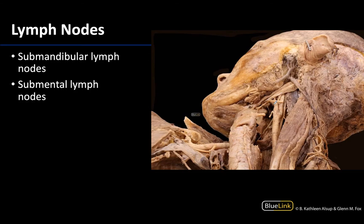We're looking at an inferior lateral view. Let's identify structures that we already know. Of importance here is your digastric muscle. You can see the anterior belly here and the posterior belly back here, so you know that you're looking into that submandibular triangle region.